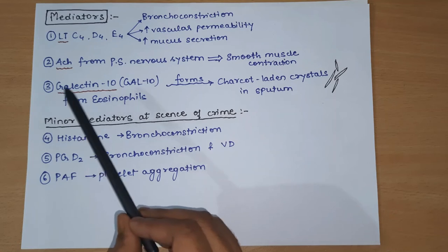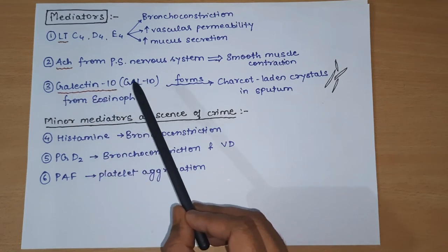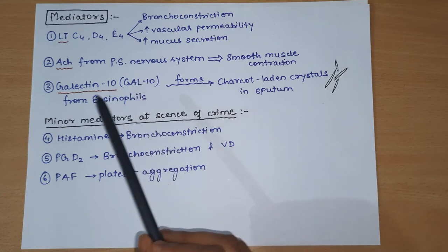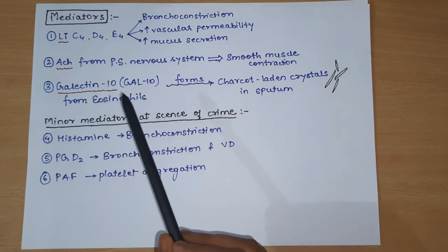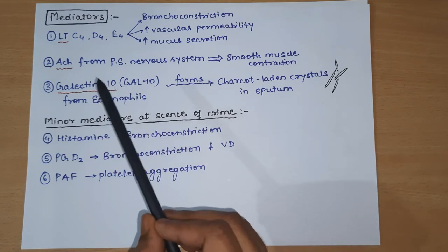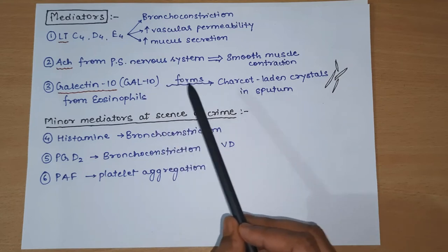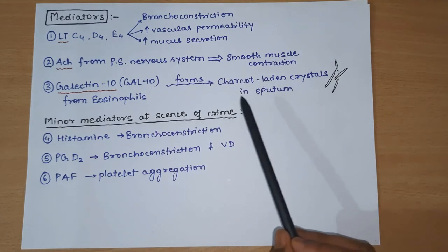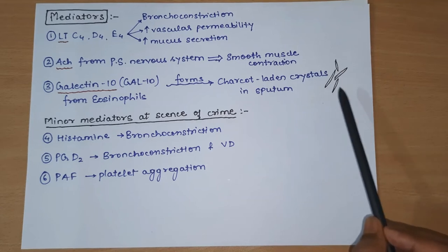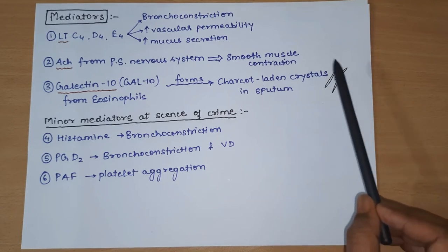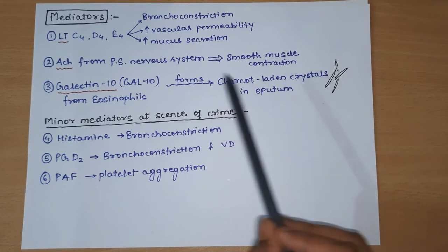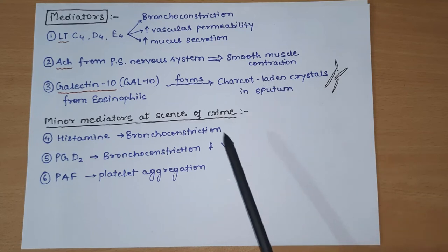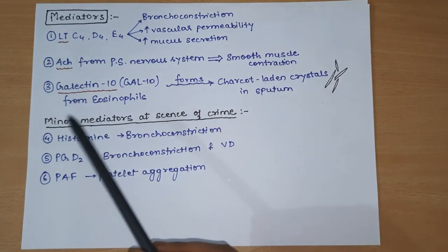The third mediator is galectin-10, represented as Gal-10. Galectin-10 is secreted by eosinophils, and it finally forms Charcot-Leyden crystals in the sputum - crystal-like structures seen in sputum due to galectin-10. These were the major three mediators involved in bronchial asthma.